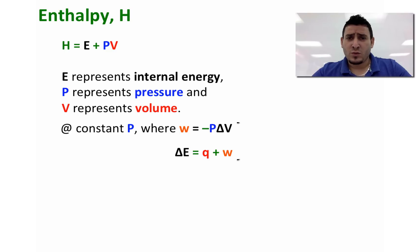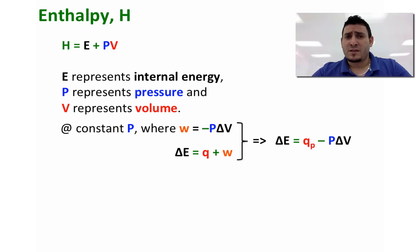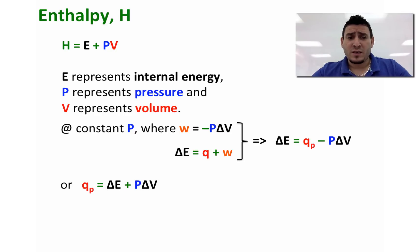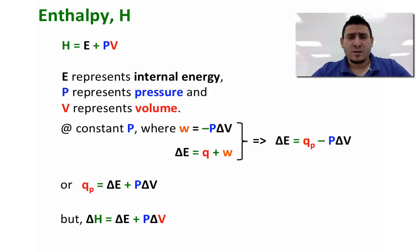Therefore, if we replace work by its expression, we get delta E equals Q_P minus P multiplied by delta V. We can rearrange this to give Q at constant pressure equals delta E plus P delta V. Looking at the expression of H again, this gives us delta H equals delta E plus P delta V. Comparing Q_P and delta H, this means that delta H equals the heat at constant pressure.